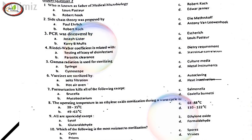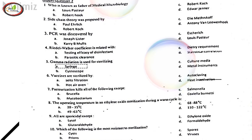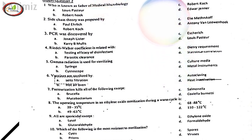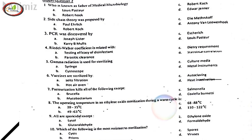5. Gamma radiation is used for sterilizing, A. Syringe. 6. Vaccines are sterilized by, A. Seitz filtration. 7. Pasteurization kills all of the following except, D. Koch C. E. labernate. 8. The operating temperature in an ethylene oxide sterilization during a warm cycle is, B. 49 to 63 degrees Celsius.